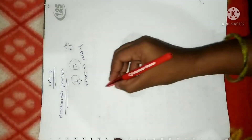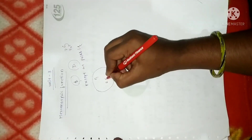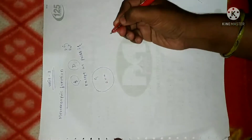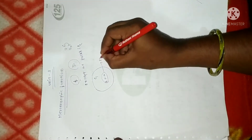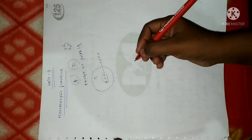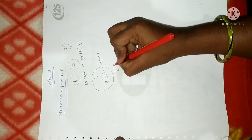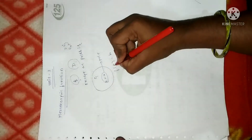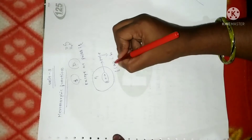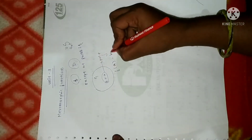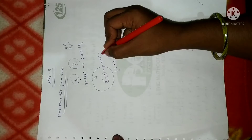Further, remember: suppose f(z) is a meromorphic function in a complex plane and suppose z = a is a pole. Then by definition, f(a) = ∞. As per the definition of a pole, whenever you substitute that point into the function you get infinity, so that point becomes a pole.